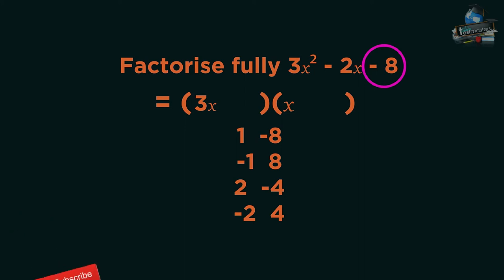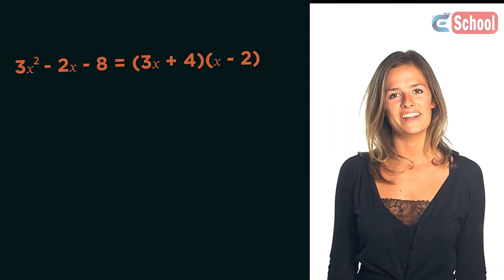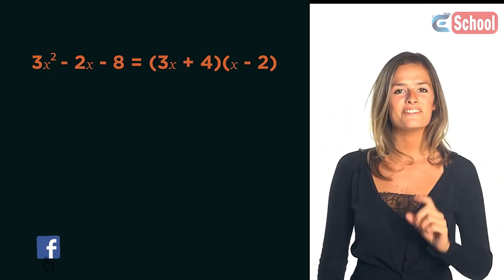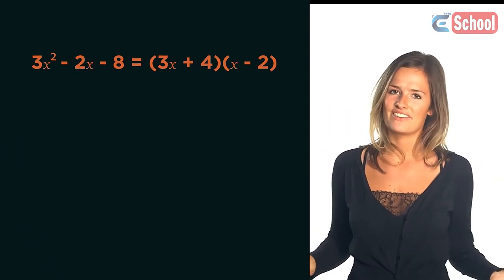You can do it by trial and error and just spotting the factors. So put down the 3x at the front of the first bracket. Work out what multiplies to give the negative 8. Then trial and error to work out what adds to give negative 2. But being very careful to remember that the 3x will affect the negative 2. So there's a lot of trial and error involved. Luckily for you there's a fail-safe method that doesn't have trial and error.